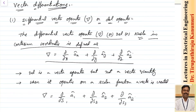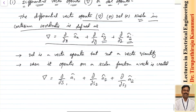It is given by ∂/∂x in the direction of ax, and ∂/∂y in the y direction, and ∂/∂z in the z direction. You have to remember here that del is a vector operator but it is not a vector quantity. A vector will be generated when you multiply this vector operator with some scalar quantity — then a vector will be produced for that particular scalar quantity.